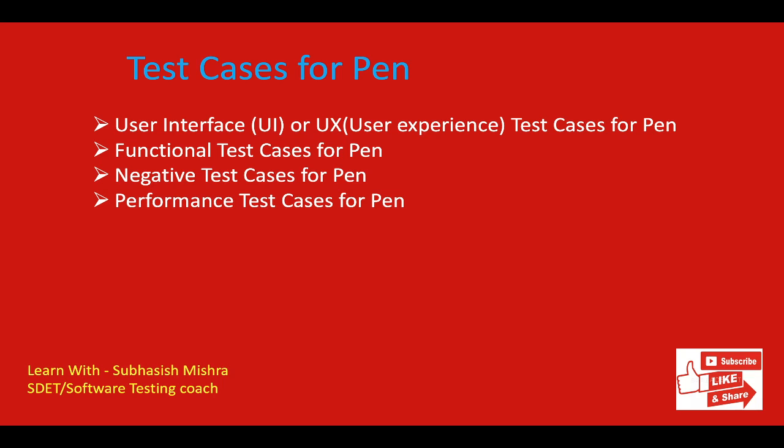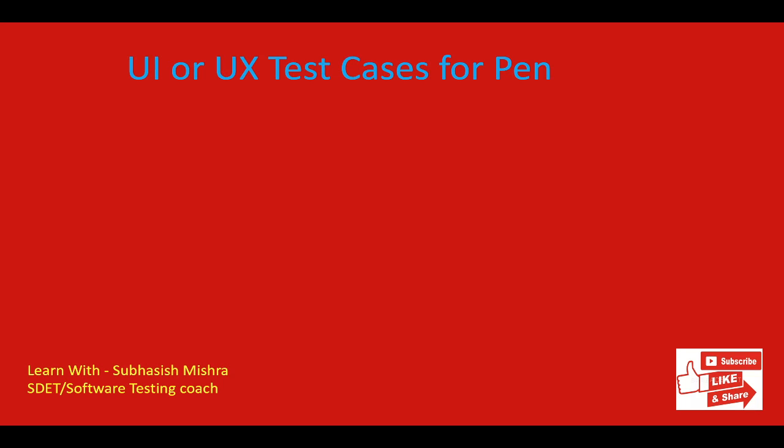The first thing is user interface or user experience test cases for the pen. We should always cover the UI and UX test cases — these are very important. UI test cases cover the testing of the graphical user interface of the product being tested, and here the product is the pen. User experience also matters because we should know what is the experience of the user while using that particular product. Then we have functional test cases — we should check the functionality of that product is working fine. Then we have negative test cases to check where exactly it is breaking. Then performance test cases, to see what is the performance of that product. So let's move to UI and UX test cases we can write for a pen.